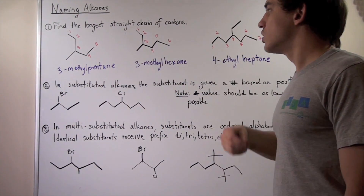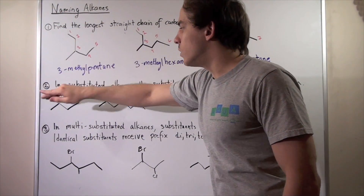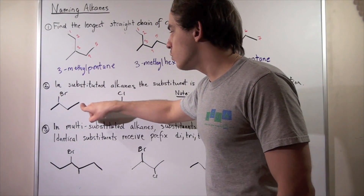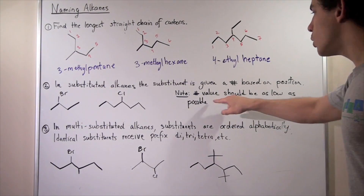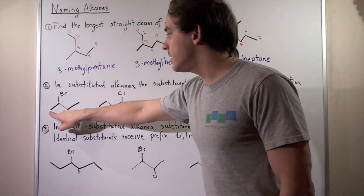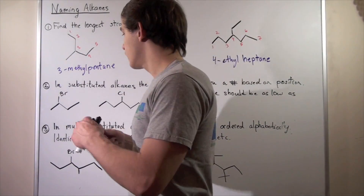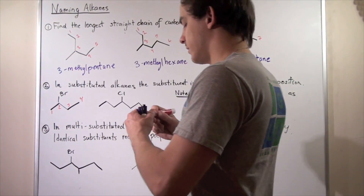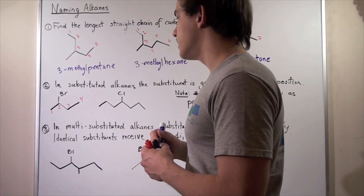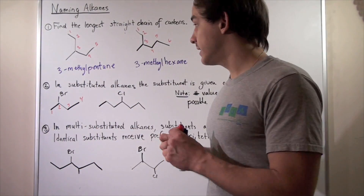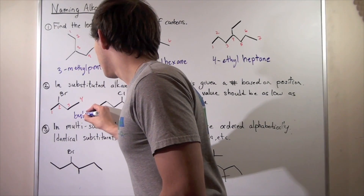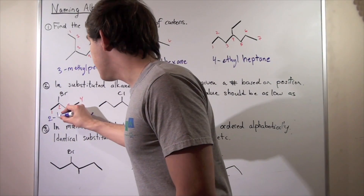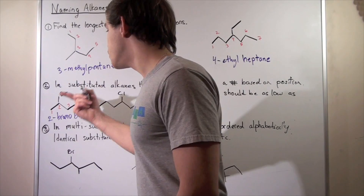Let's go back to the earlier examples. According to rule one, we want to find the longest chain of carbons — either direction gives us four. We want the lowest value for our substituent, so we begin from the side that places the substituent at position two. Counting one, two, three, four: since it has four carbons, the backbone is butane. The second position substituent is a bromine, so we name it bromo. Bromo is short for bromine.